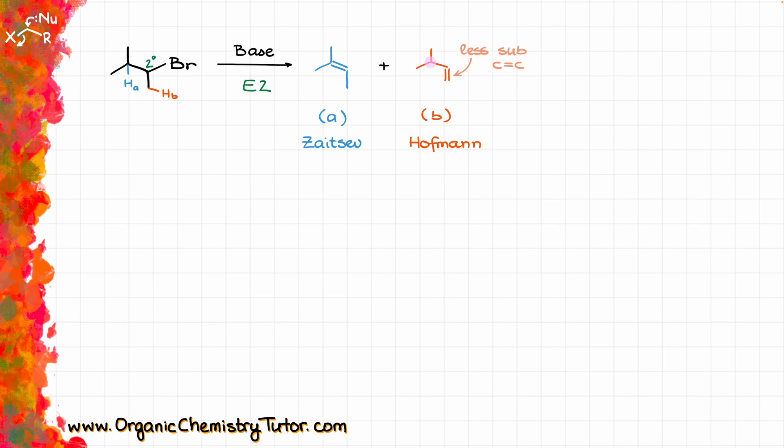So this review is something that you have already seen before, so nothing new so far, right? Now, how do we know which of the two products is going to be our major? Well, the choice of a base in this case is going to be paramount for us. So if we are using a smaller base, typically smaller bases are going to favor the Zaitsev product, and bulkier bases typically are going to favor the Hoffman product.